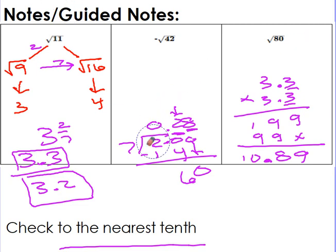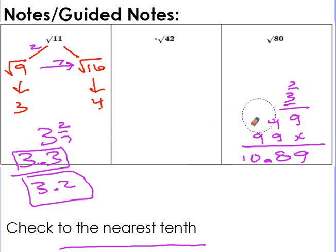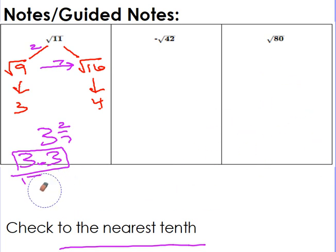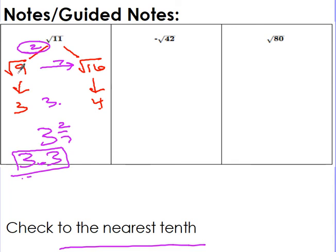Quick recap: first, figure out the two perfect squares the number is between — that's always first. Then figure out how far away the number is from the left-hand perfect square, because I know it's going to be that integer point something. Divide that distance by the total distance between the two perfect squares, and that gives a really good estimation.